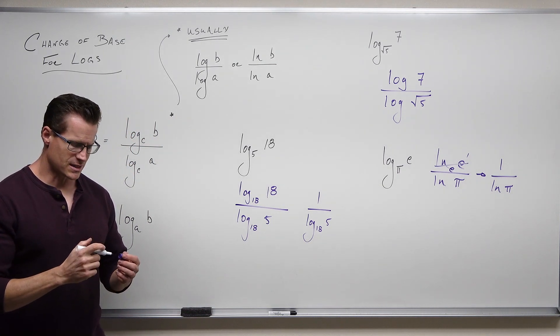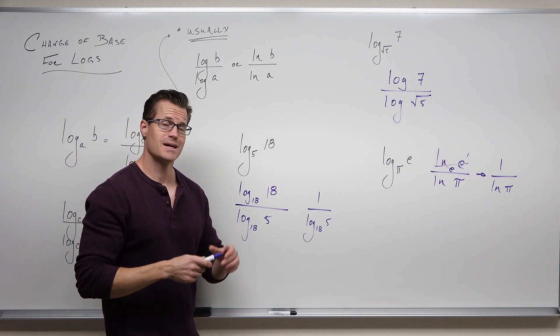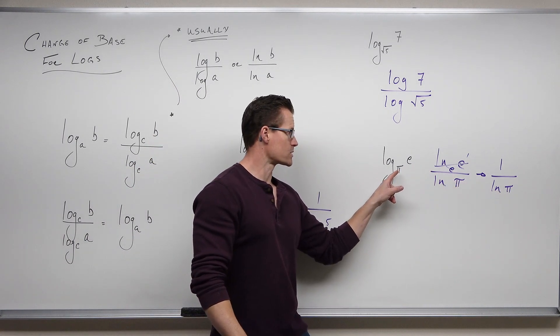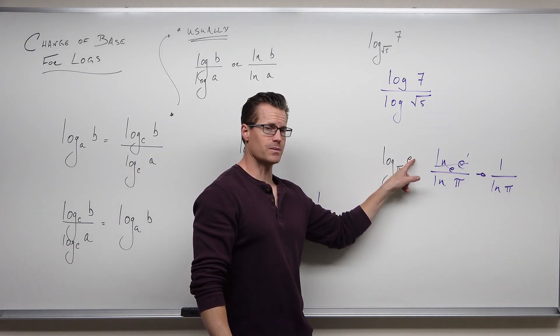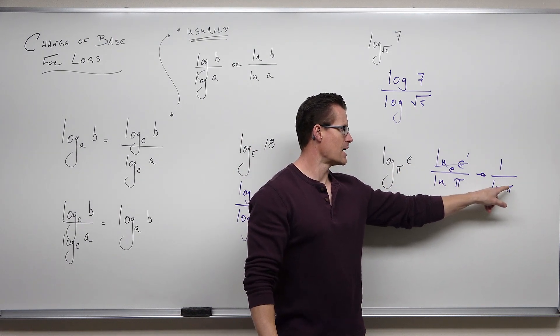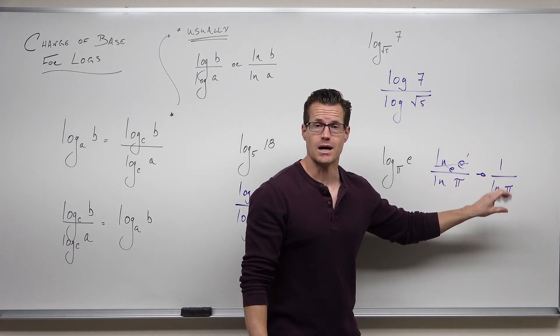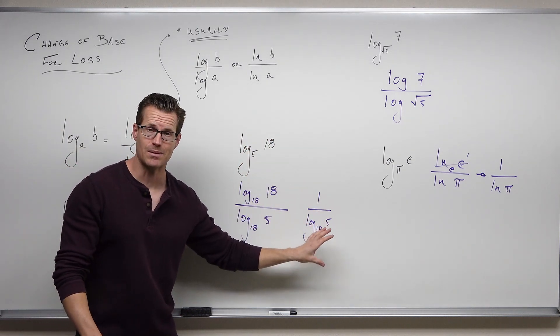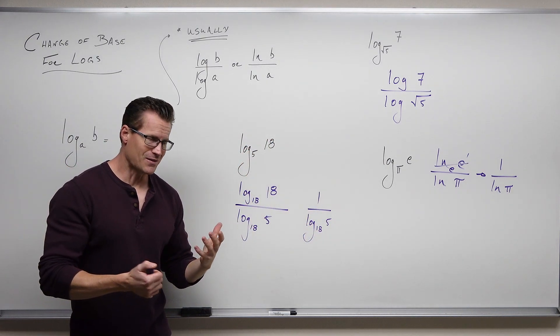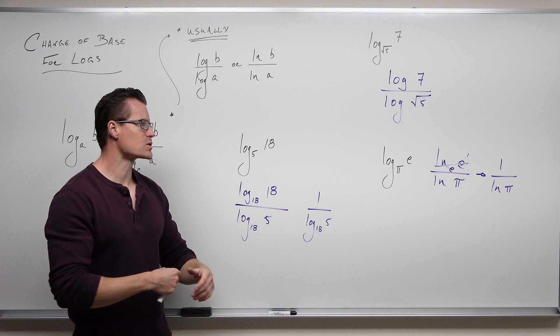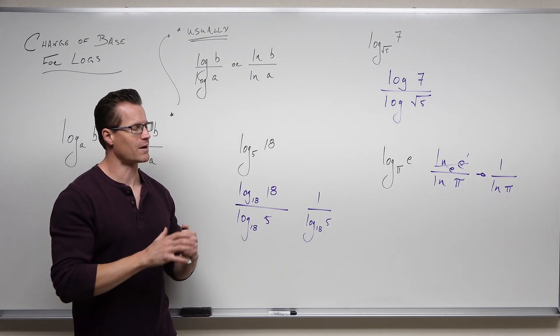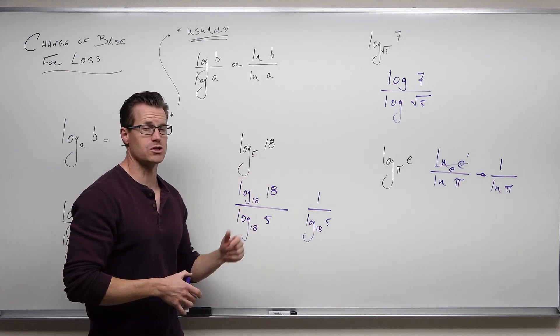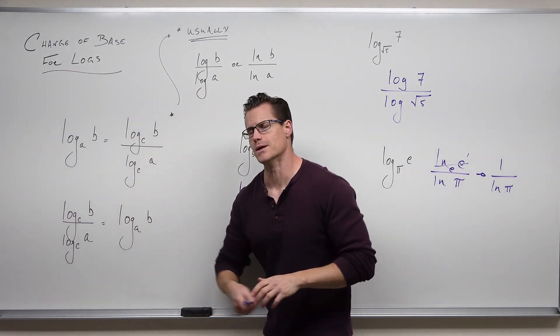Wait a minute, didn't the base and the argument just change spots? Yes, and that's exactly what happened here. E is our base and π is our argument, but it's on the denominator, just like the reverse of this is now on the denominator. It's kind of interesting. So sometimes that's relevant for us. We can always match up whatever base we want. We can always pick whatever base we want for logarithm as long as you use the change of base formula to do it.